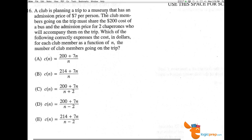Number 16. A club is planning a trip to the museum that has an admission price of $7 per person. So $7 per person for admission.